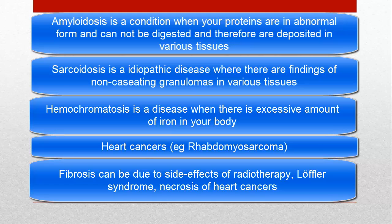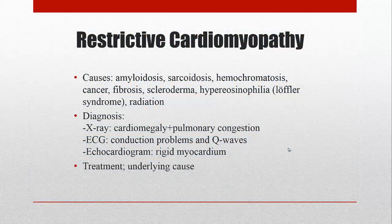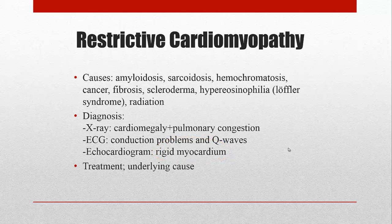Diagnosis of restrictive cardiomyopathy is usually by X-ray, where you will see enlargement of the heart due to infiltration and signs of pulmonary congestion due to failure. Electrocardiography will show conduction problems such as blocks and pathological Q waves, due to the multiple infarctions associated with this condition. On echocardiogram you will see that the myocardium is quite stiff and rigid. When it comes to treatment, there is no specific therapy, so you treat the underlying cause. And that's about it for the different types of cardiomyopathy — thank you for listening.